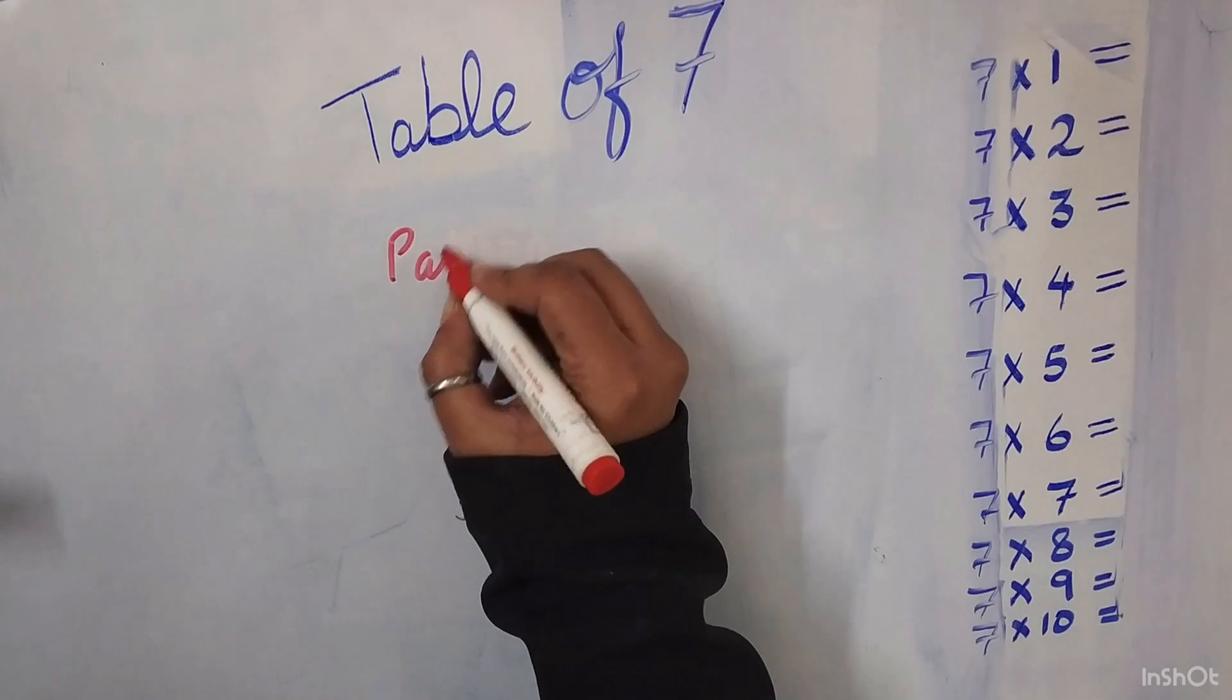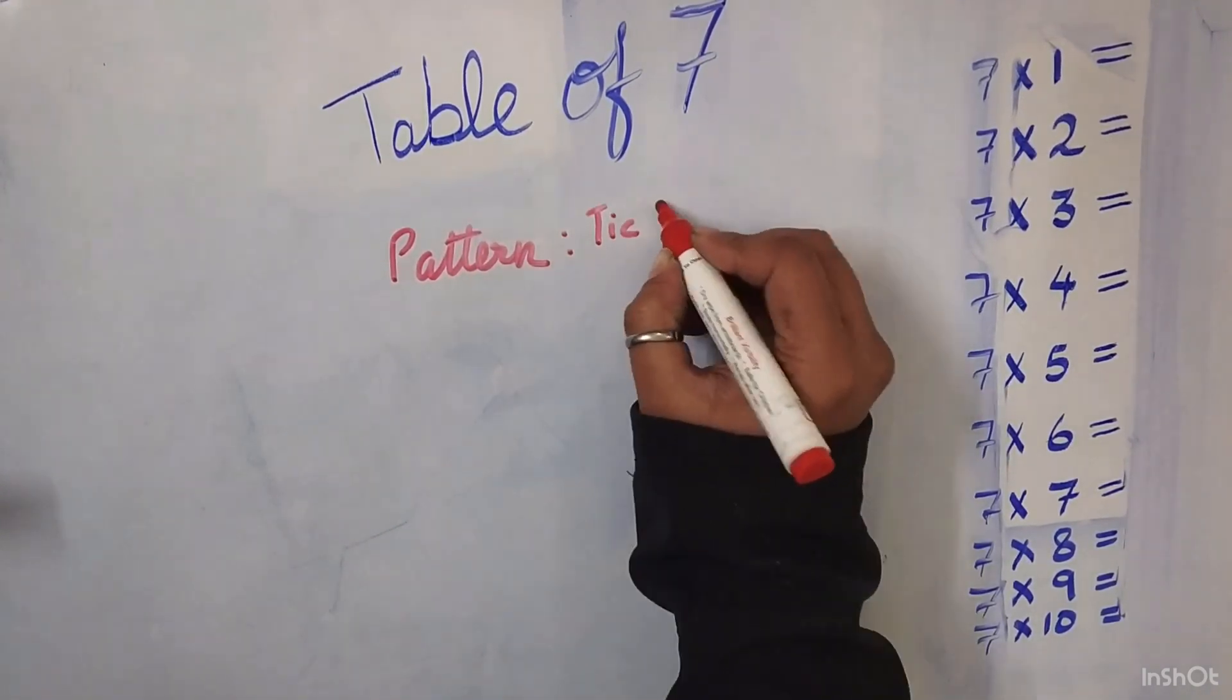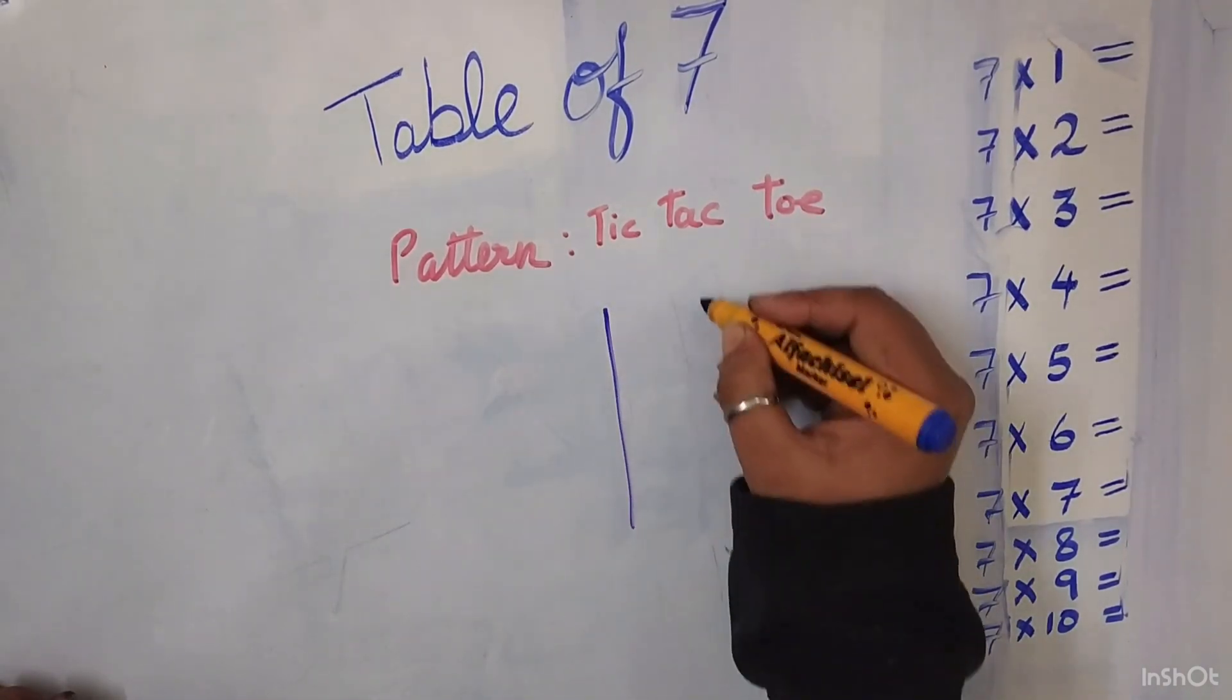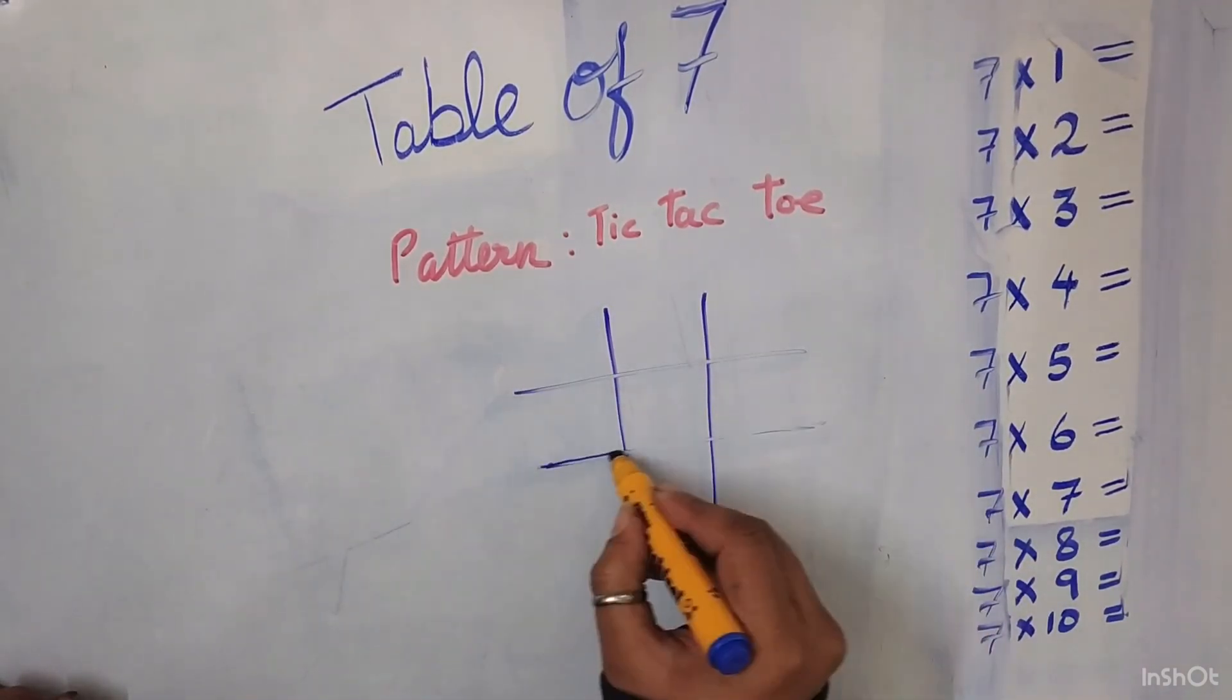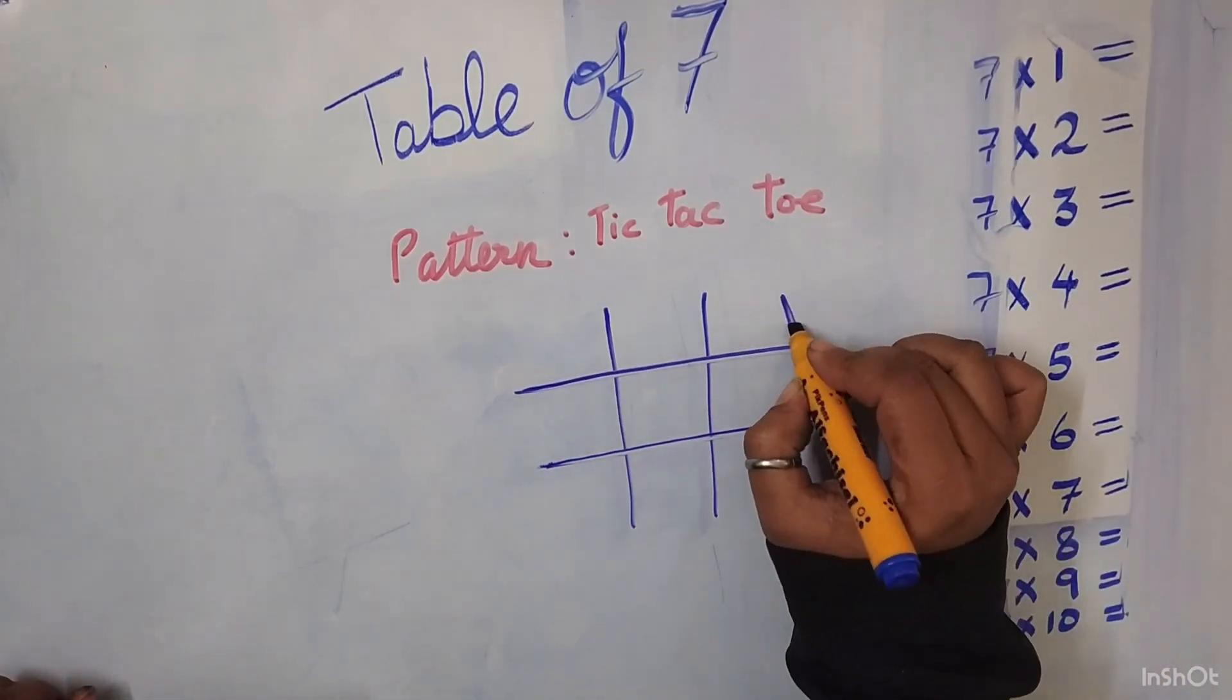Now we come to the table of 7. Here the pattern is again the tic-tac-toe pattern. Did you know that the tic-tac-toe was so handy? Let me draw the tic-tac.